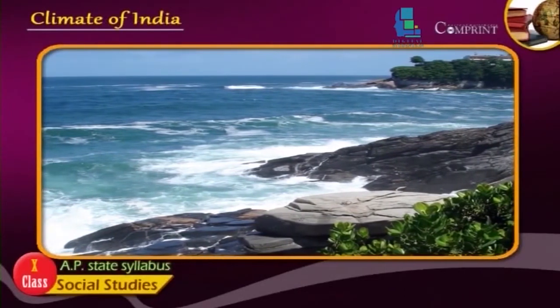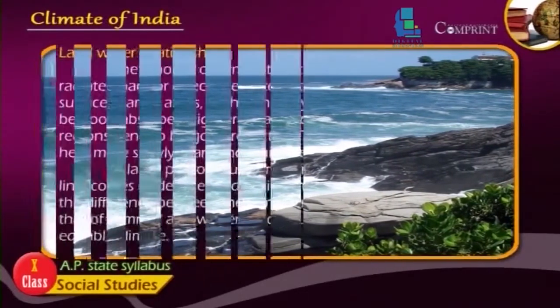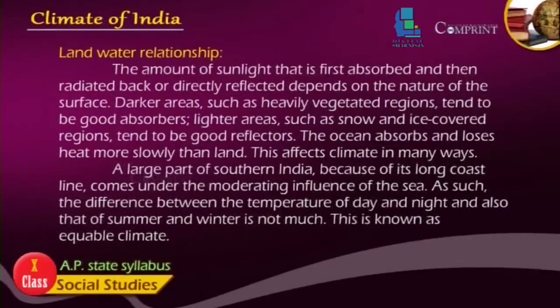A large part of southern India, because of its long coastline, comes under the moderating influence of the sea. As such, the difference between the temperature of the day and night, and also that of summer and winter, is not much. This is known as equable climate.